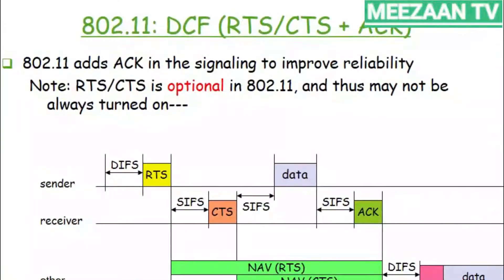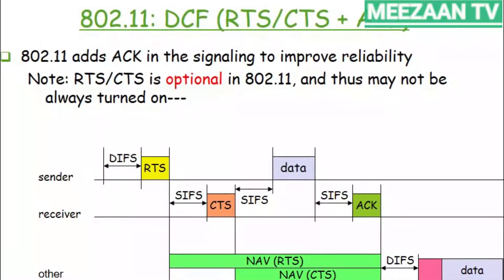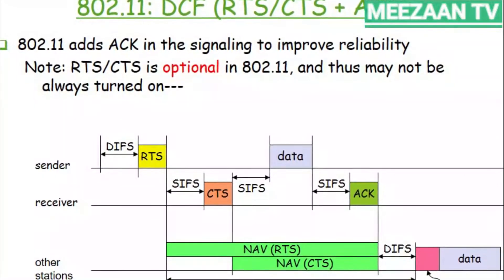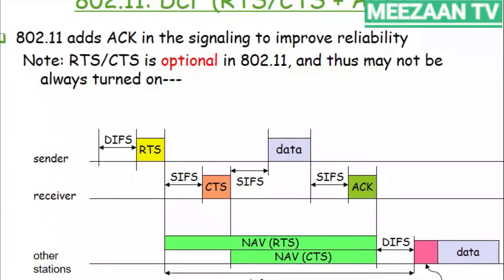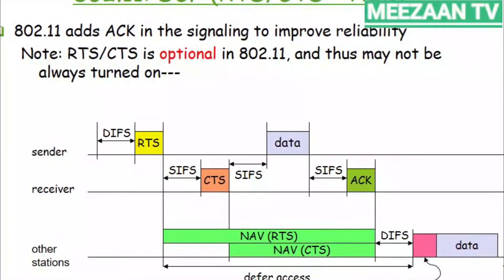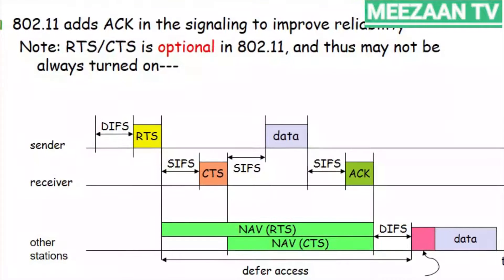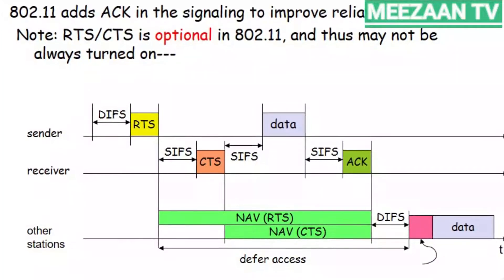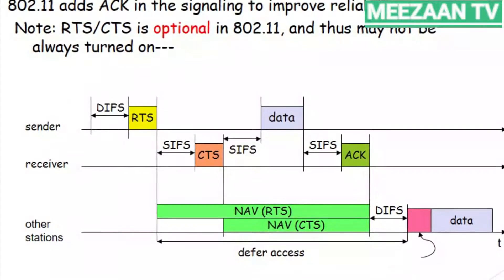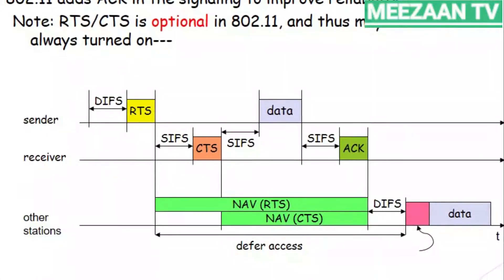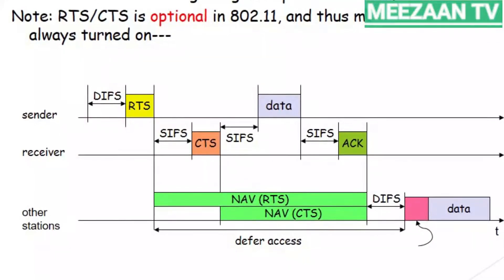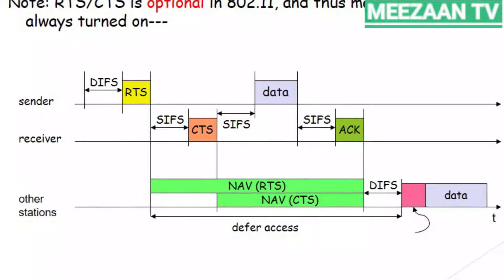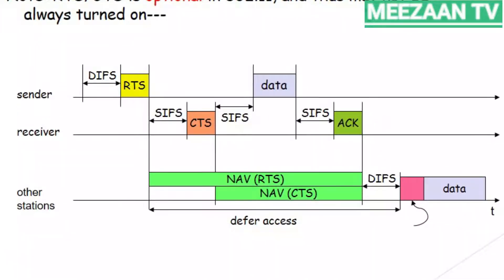The complete working of DCF: before sending a frame, the source station senses the medium by checking energy level at the carrier frequency, using a persistent strategy with backoff until the channel is idle. After the channel is idle, the station waits for a DIFS period, then sends an RTS control frame. The receiver, after waiting a SIFS period, sends a CTS to the source station, indicating it is ready to receive. The source station then sends data after waiting a SIFS period.